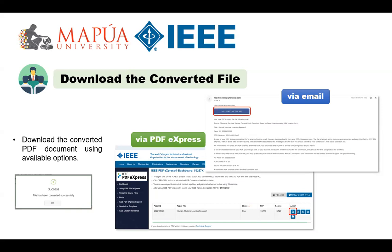Click the PDF icon — the first icon on the action tab — to download the document. Or you can also refer to the email to quickly download the file by clicking the download link. A sample email is shown on screen now.